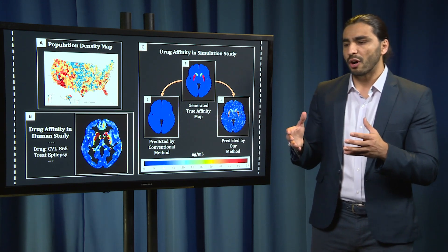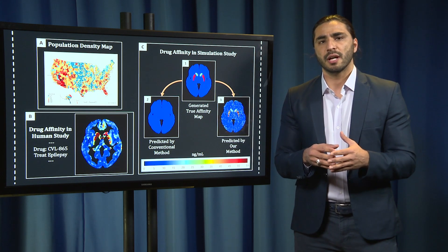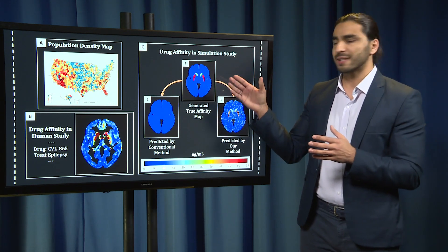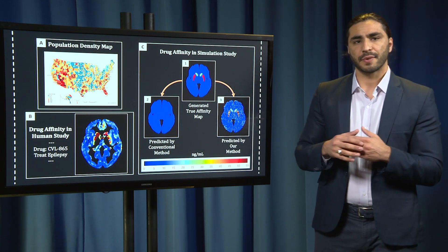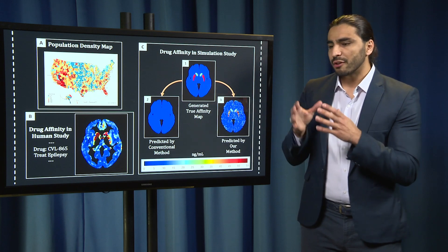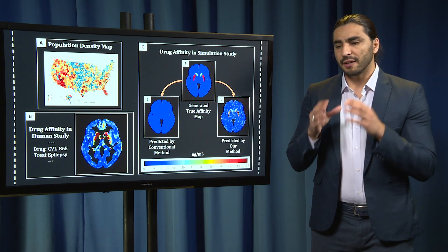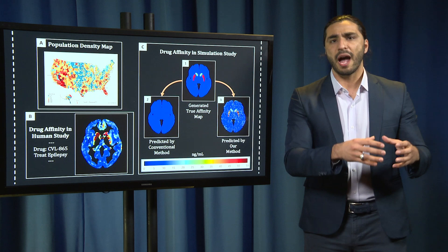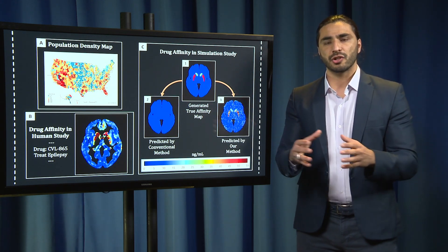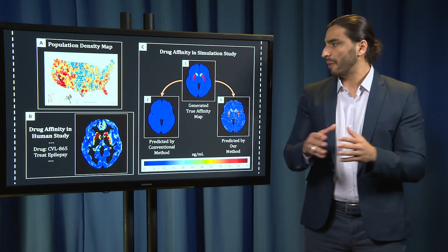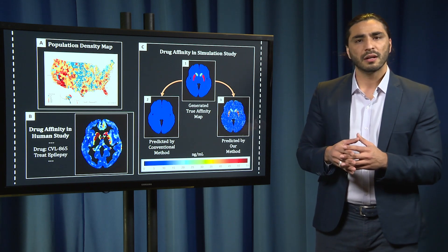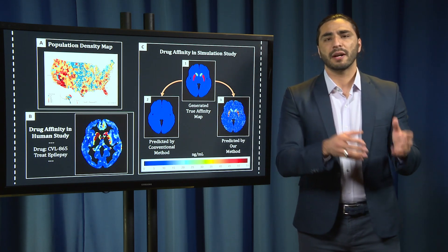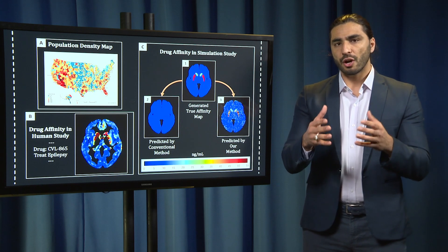So how do we know our results are accurate? To validate our methodology, we conducted a simulation study shown in C. We generated simulated fake data that would produce an affinity map with regional variation in the brain. This image, shown in C1, acted as the ground truth for comparison purposes.